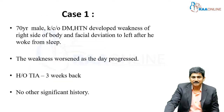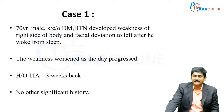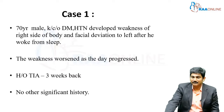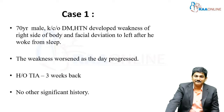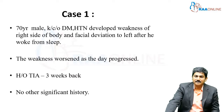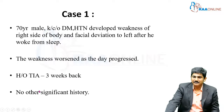Here we have a first patient, a 70-year-old male, a known diabetic and hypertensive, who developed weakness of the right side of the body and facial deviation to the left after he woke up from sleep. The weakness worsened as the day progressed. History of transient ischemic attack around three weeks back. No other significant history.